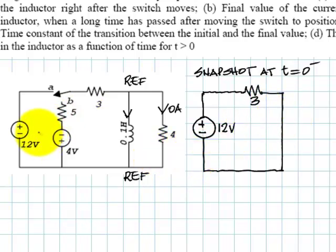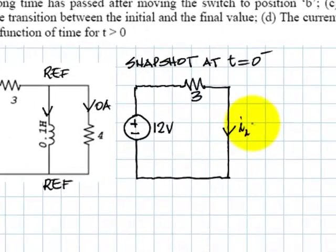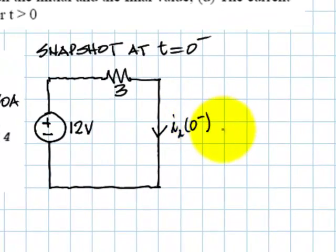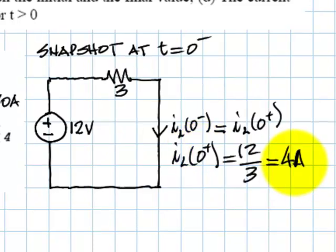All we have is the twelve volt source, the three ohm resistor, and the inductor represented by this wire. This is the current in the inductor at zero minus, which is the same current at zero plus, which is what the problem is asking us about. And what value is that? Twelve over three, and that current is four amps. And that answers question A.